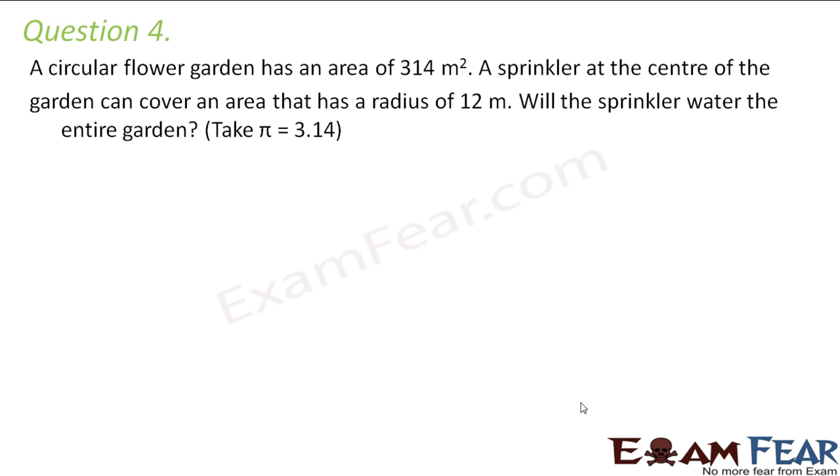Let's make use of a diagram to understand the problem. So let's say there is a circular flower garden, and the total area of this flower garden is given as 314 meter square. A sprinkler at the center of the garden is located here at the center.